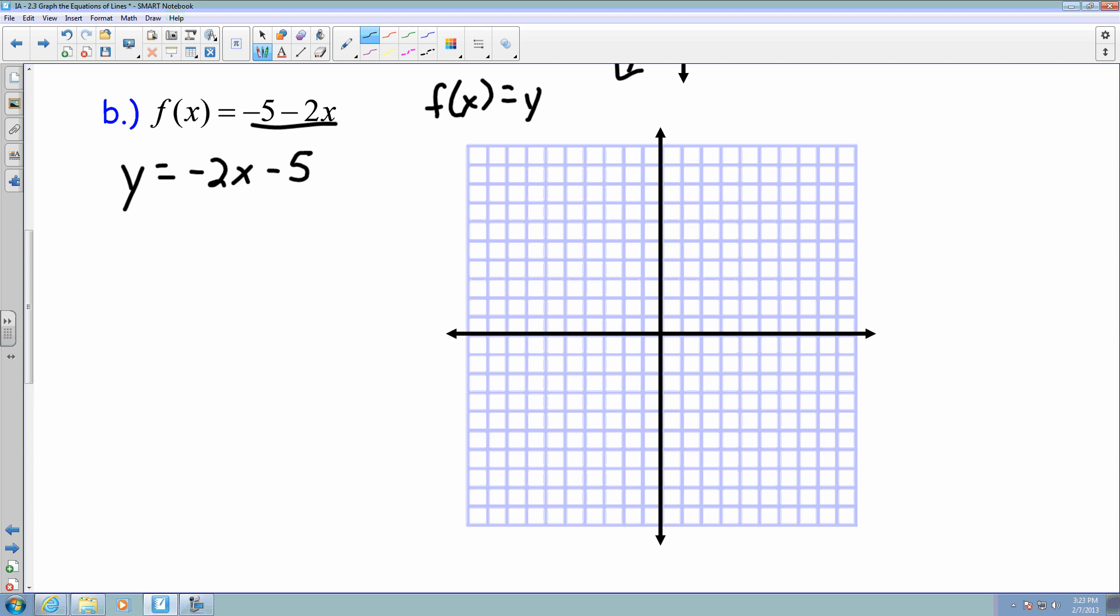So I know that my y-intercept is negative 5, so that's 1, 2, 3, 4, 5. I've plotted the point, and my slope here is a negative 2 over 1. So I can either go down 2 to the right 1, or I can go up 2 and to the left 1. Either way, I'm still going to connect those points to make my line.